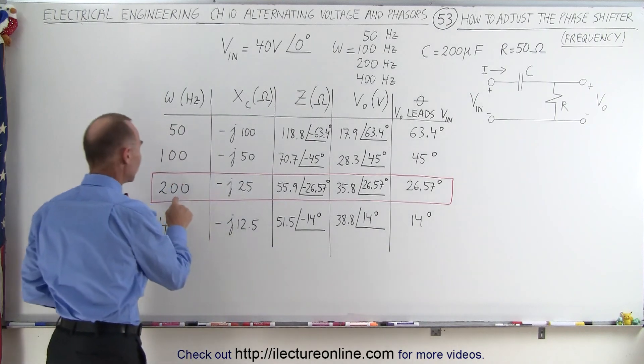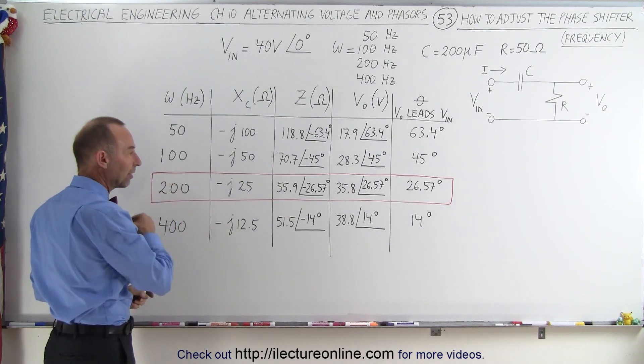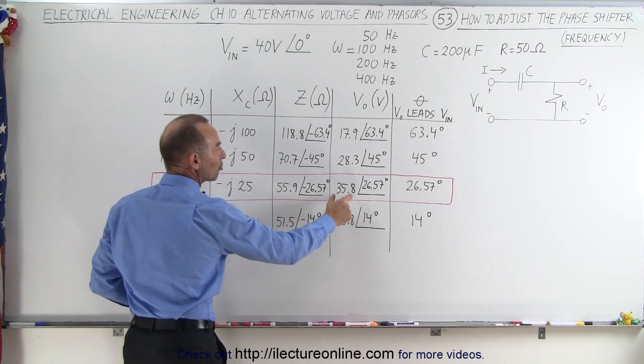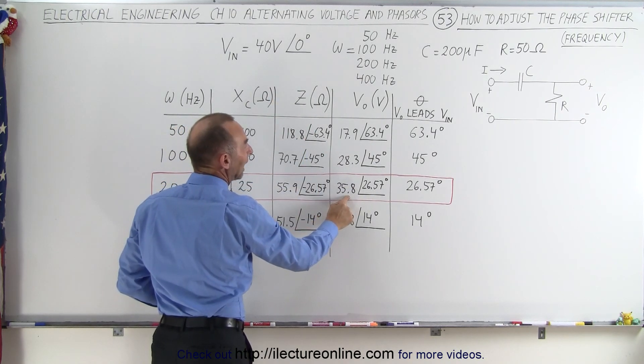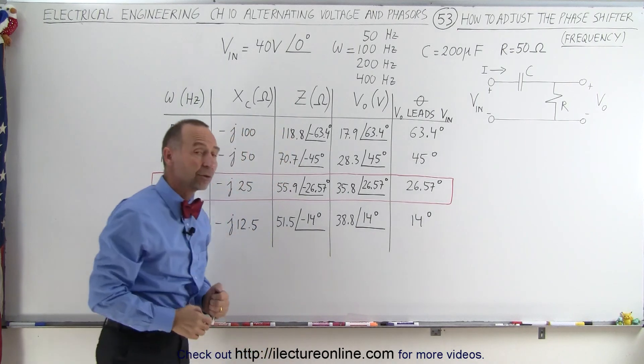So that means that when we had a frequency of 200 Hz, like we did in the last example, we had a slight drop in the voltage output, about 10% drop or so, and we had a phase shift of about 26.5 degrees.